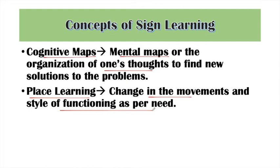The next concept is Place Learning — change in movements and style of functioning as per need. We have some previous knowledge and we do problem-solving based on it. But sometimes the domain of the problem is different, so we need to use our previous knowledge with some changes in functioning for the new problem. To prove place learning, Tolman did an experiment where the rat reached a T-maze point and had to decide whether to go left or right as per its needs.